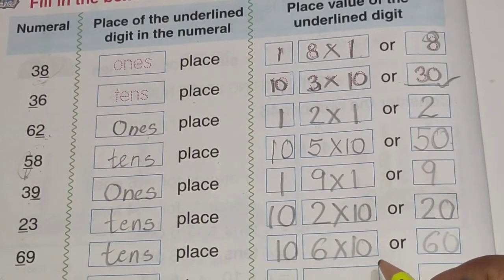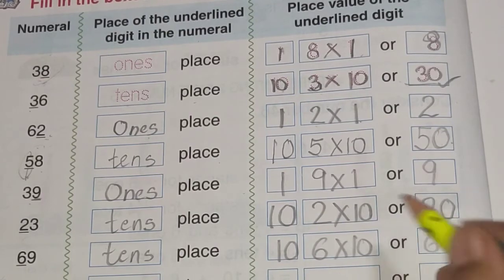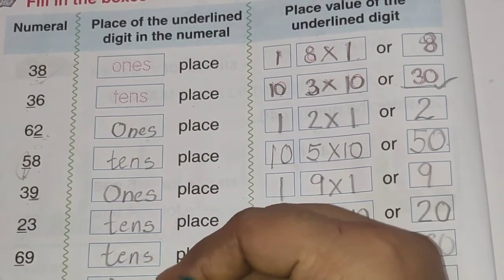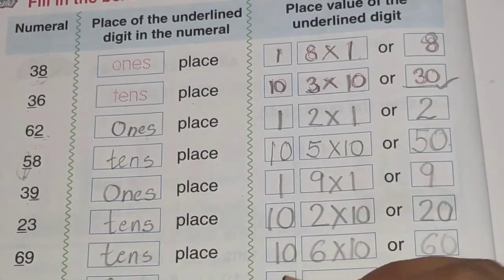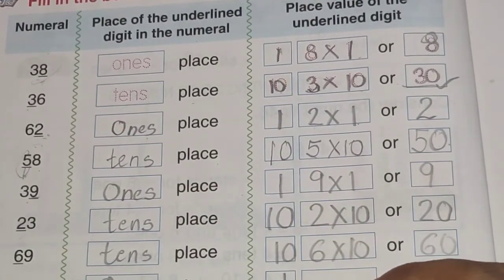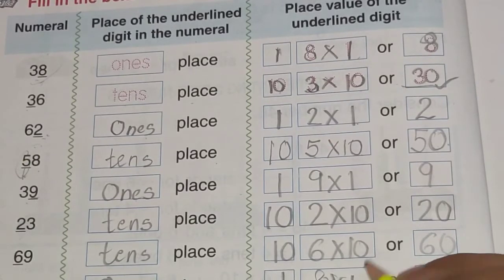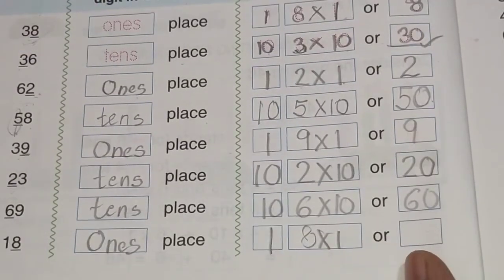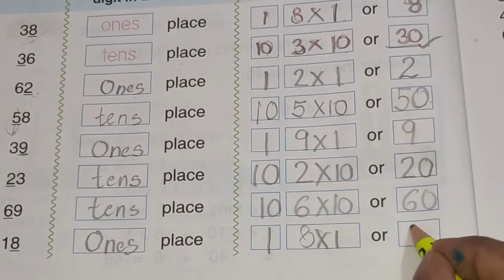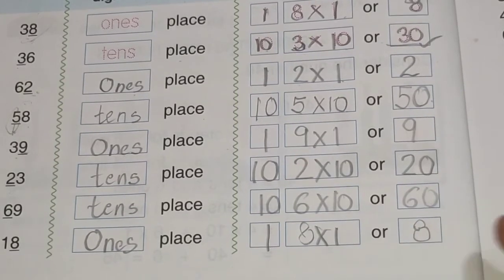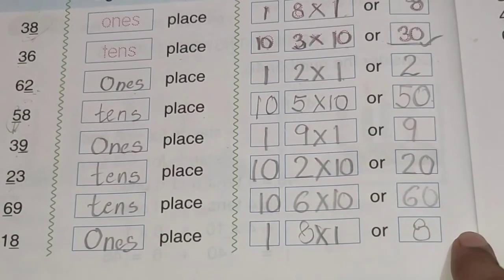Now this is 18. 8 hai ones place pe. So we will write O, N, E as ones. Ones ki value hai 1. And the number is 8. So 8 into 1. And 8 into 1 is 8. 8 ones are 8. So is tarah se aapka yeh questions ho jayengi.